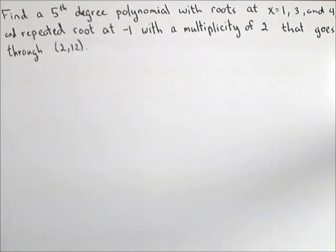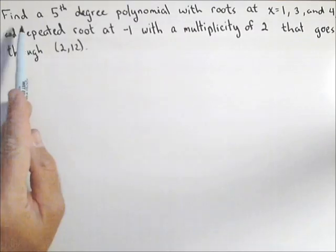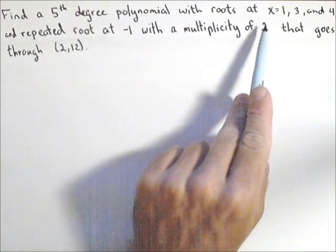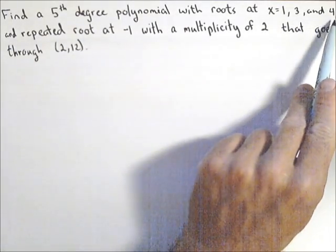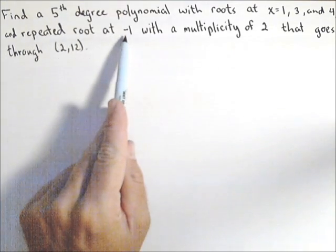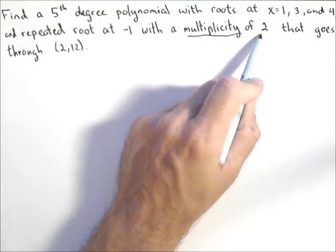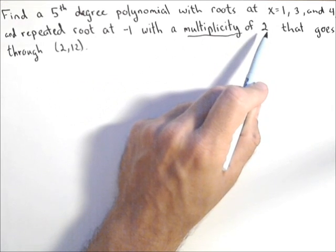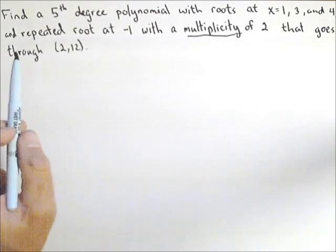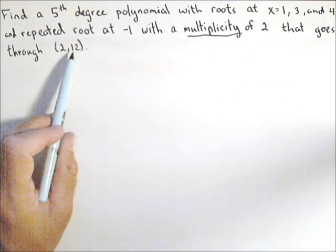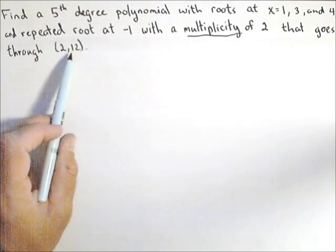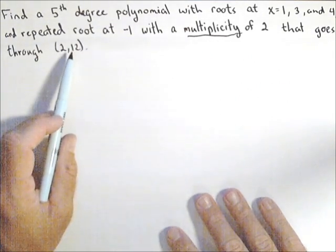In this video, we're going to talk about creating a polynomial given the roots. We're going to find a fifth degree polynomial with roots at 1, 3, and 4, and a repeated root at negative 1 with a multiplicity of 2. That means it's repeated two times. We're also going to require that this polynomial goes through the point (2,12). That'll make it unique, and I'll explain what I mean by that in a second.